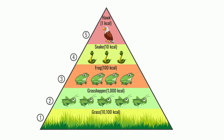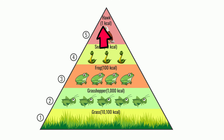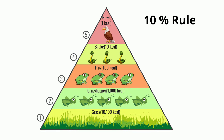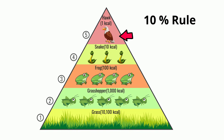As you move from one trophic level to another, you lose approximately 90% of the energy. This is known as the 10% rule. For example, if you start with 10,100 kcal and move up trophic levels, by the time you get to the top, only 1 kcal is transferred.